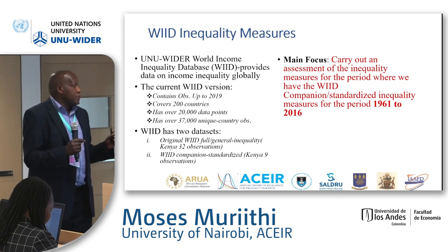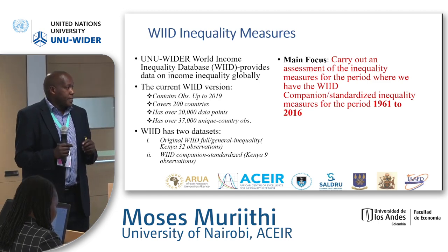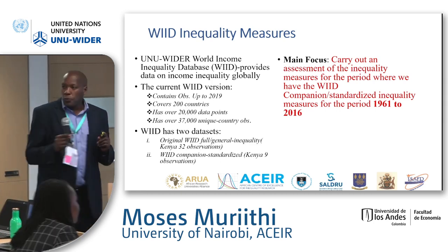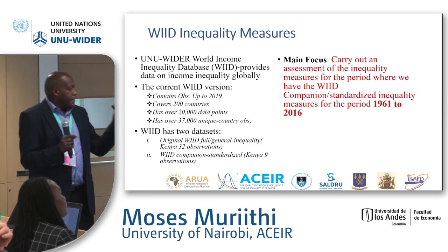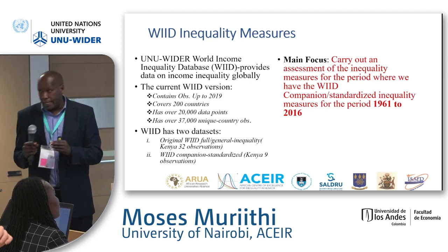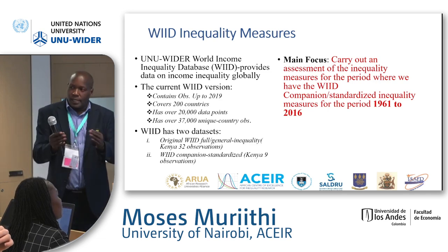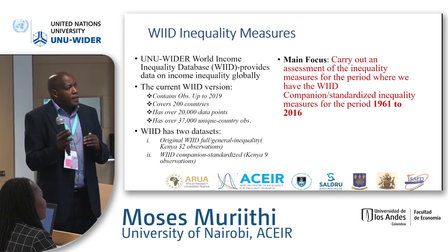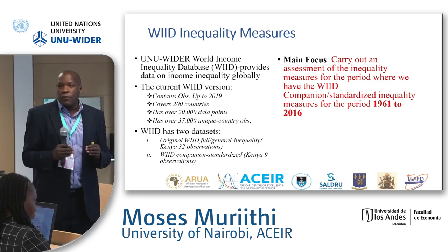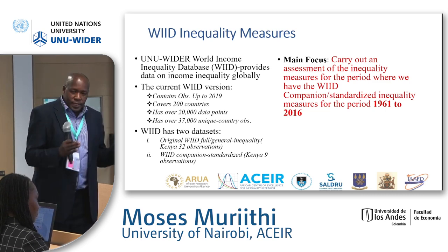The WIID database contains around 20,000 data points with over 7,000 unique country observations. For Kenya specifically, the original WIID has two observations, and there are nine companion WIID — what we call standardized WIID — observations. The main focus of this analysis is to assess the inequality measures computed for Kenya against the comparable period available in the WIID.